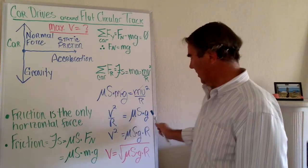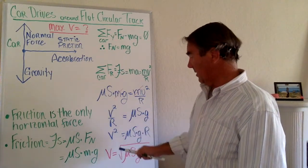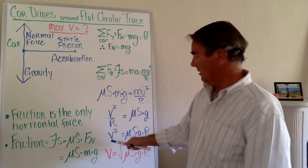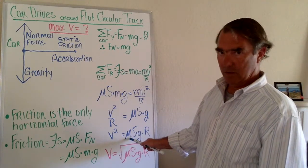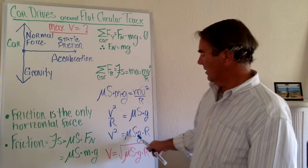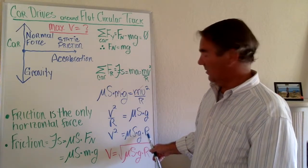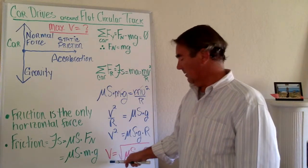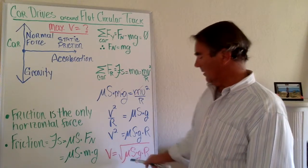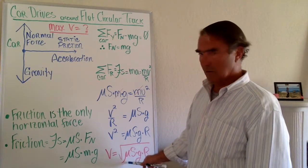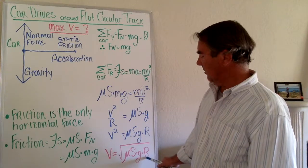Multiplying both sides by r isolates v squared: v² equals mu_s times g times r. Therefore, velocity equals the square root of the coefficient of static friction times gravity times radius.